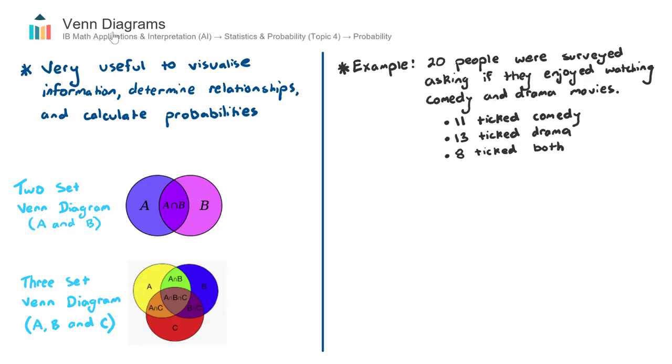In this video, we look at Venn Diagrams, which is part of the AI course under Topic 4, Statistics and Probability, under the subtopic of Probability. Under the subtopic of Probability, you'll encounter two types of questions in the AI SL course. They are Venn Diagrams and Tree Diagrams. And then in the AI HL course, you'll also encounter some other types of questions like Transition Matrices and Markov Chains.